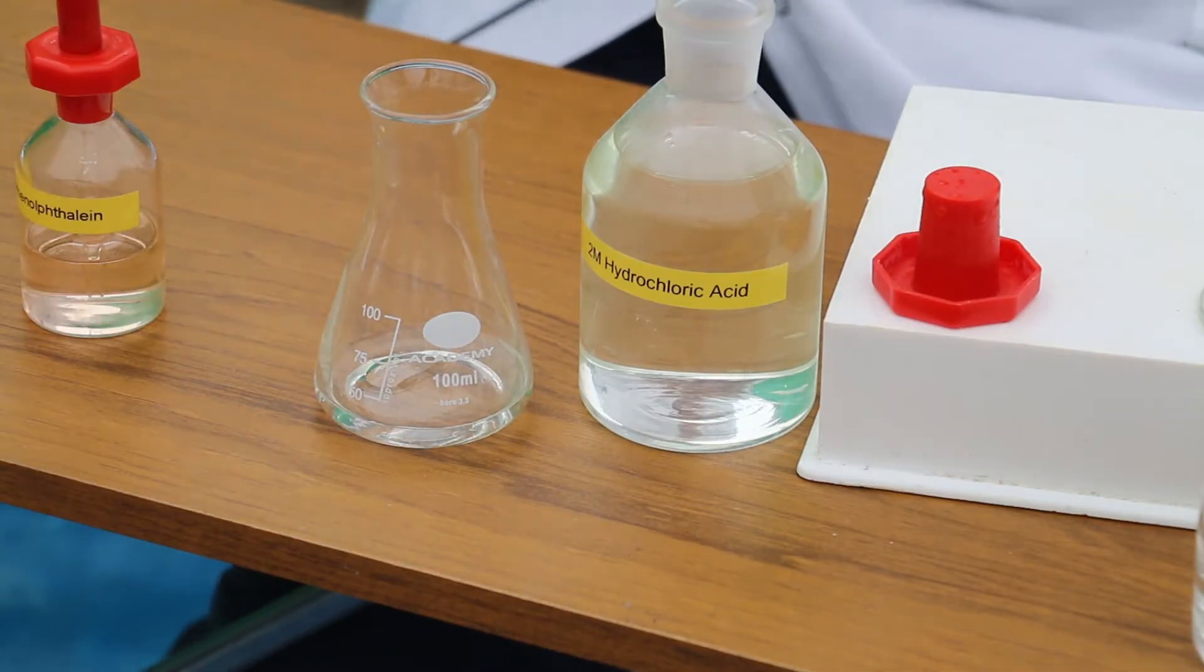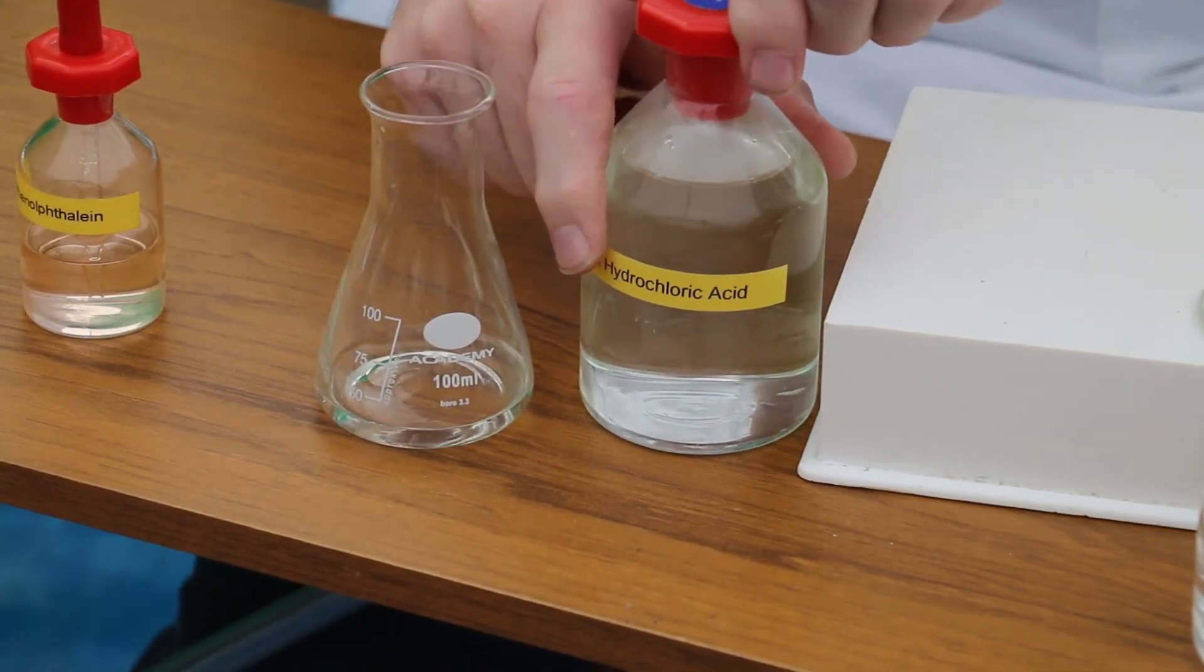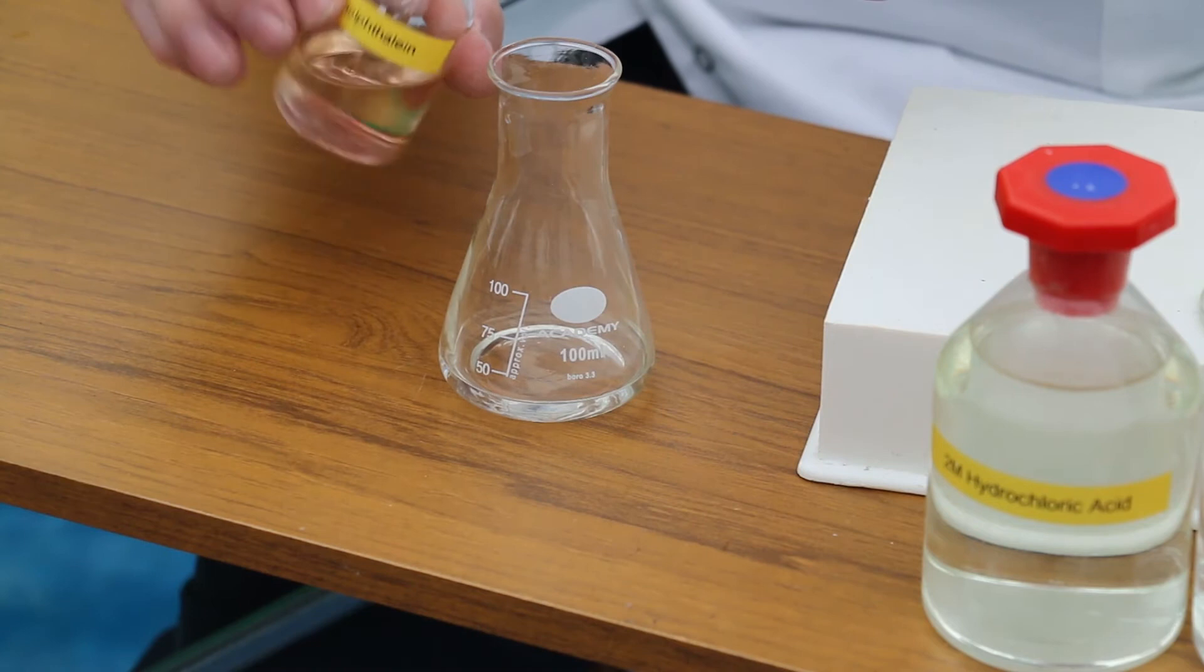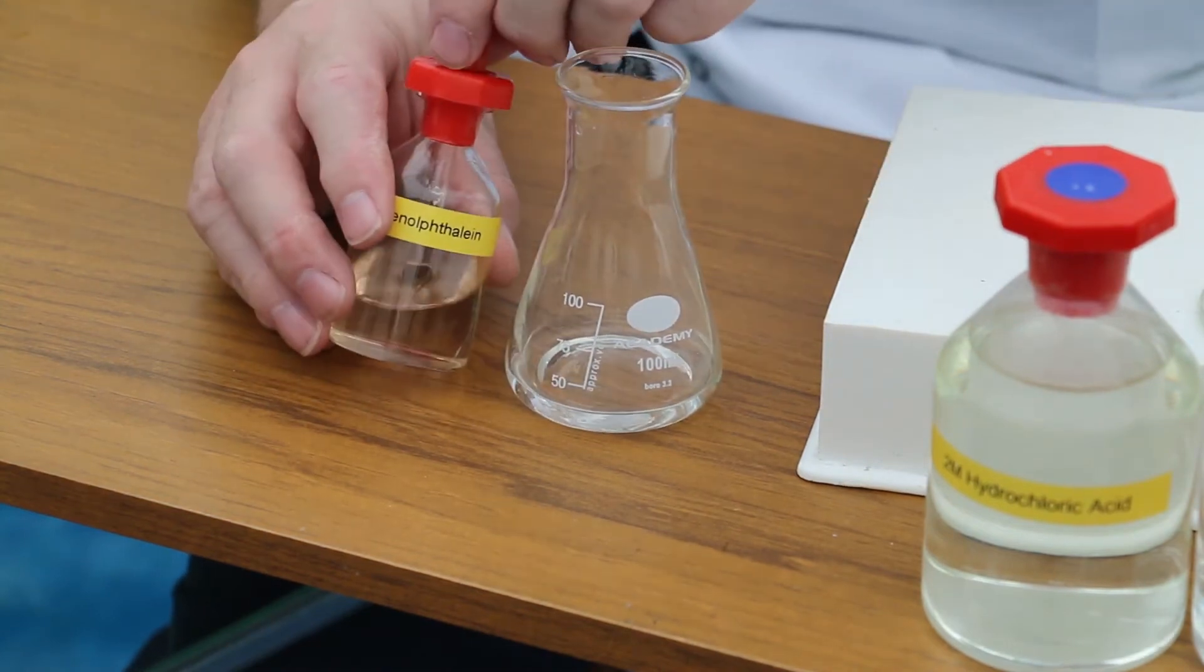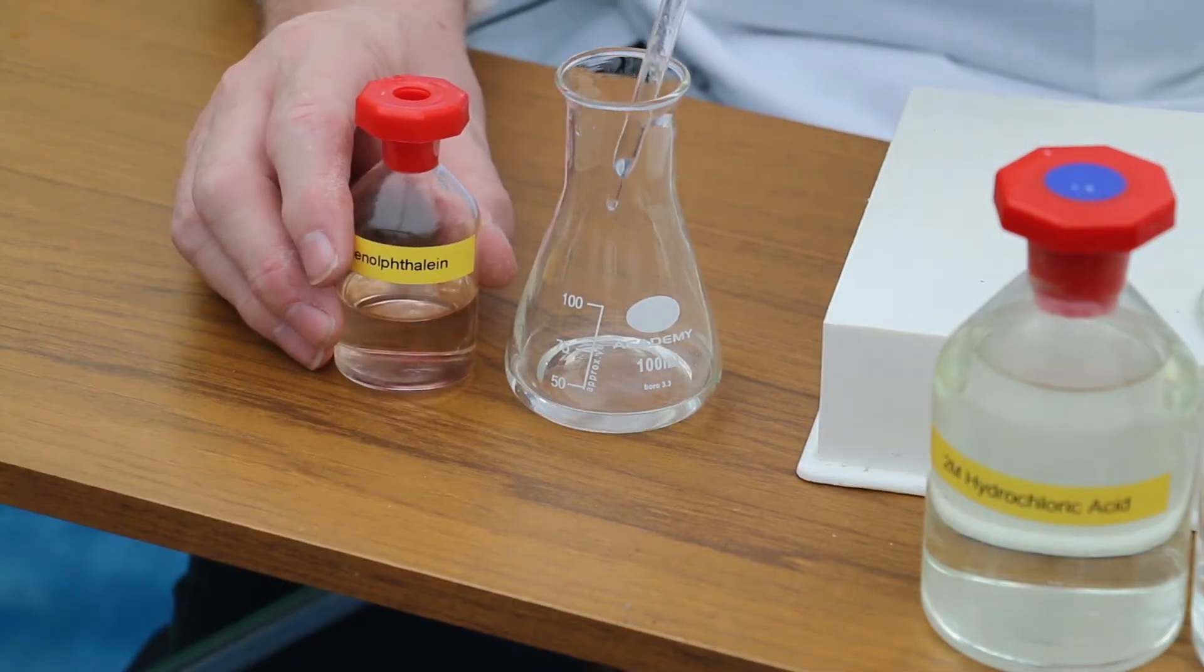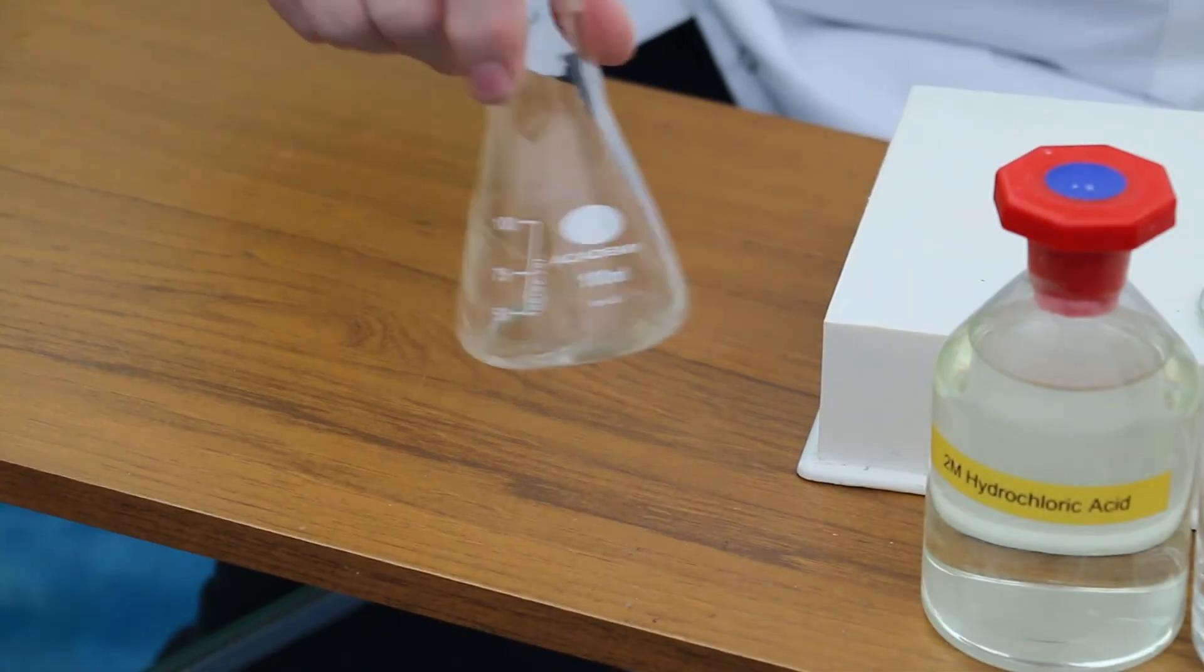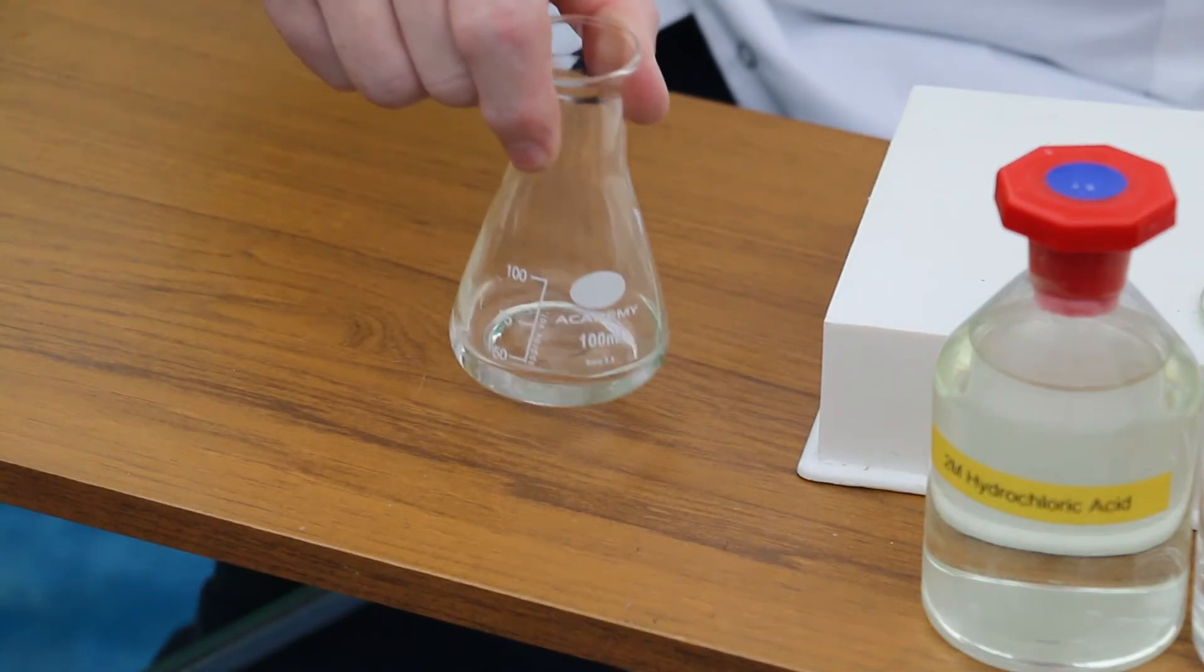Now that we've got that done I'll replace the lid on the hydrochloric acid. Our next job is to add two or three drops of this indicator, phenolphthalein, to our acid. We only need a few drops because this is very strong. I'm going to swirl the conical flask to make sure it's thoroughly mixed.